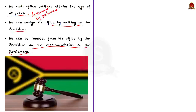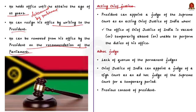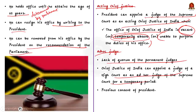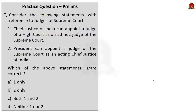Regarding acting and ad hoc judges: the President can appoint a Supreme Court judge as Acting Chief Justice when the office of Chief Justice is vacant, the Chief Justice is temporarily absent, or unable to perform duties. When there is a lack of quorum of permanent judges, the Chief Justice of India can appoint a High Court judge as an ad hoc judge of the Supreme Court for a temporary period, after consulting the concerned High Court's Chief Justice and with the previous consent of the President.